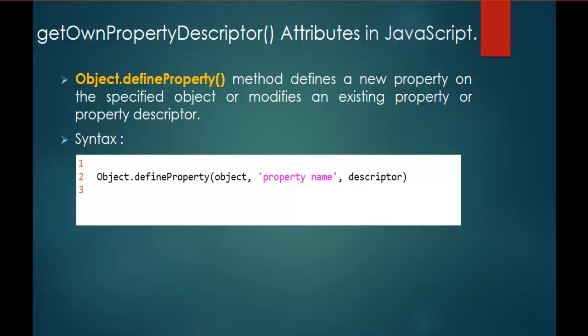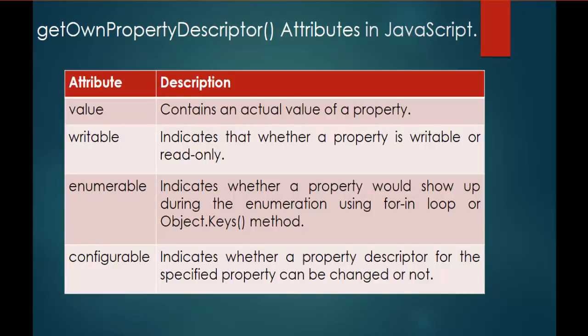In the last session, we learned the advantage of using the Get Own Property Descriptor Method. So what is that going to return? The Get Own Property Descriptor Method is going to return the nature of the property in the form of four attributes: value, writable, enumerable, and configurable. In this session, we are going to understand very clearly about writable, enumerable, and configurable.